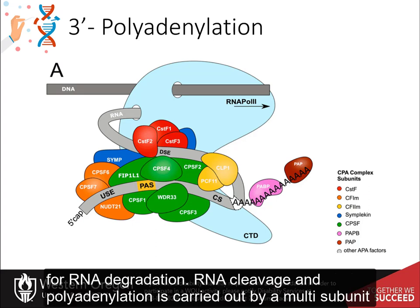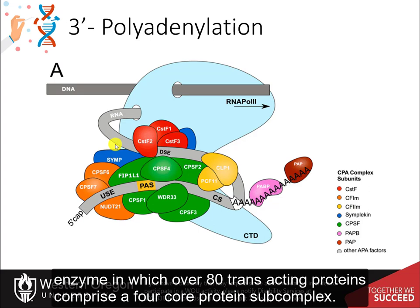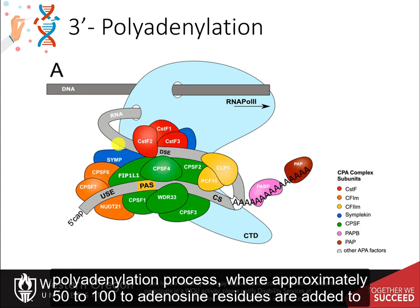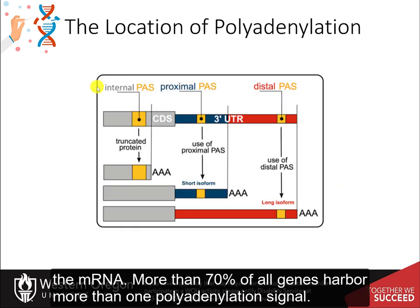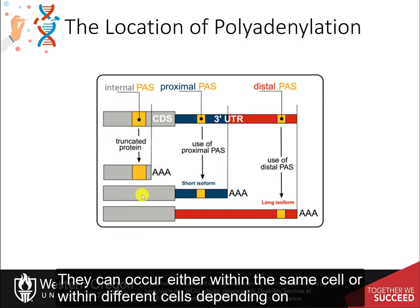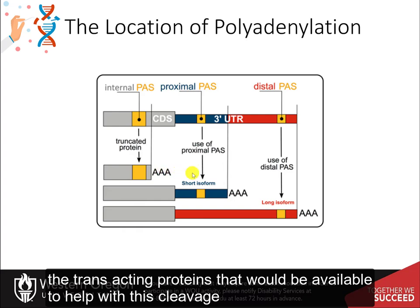RNA cleavage and polyadenylation is carried out by a multi-subunit enzyme in which over 80 trans-acting proteins comprise a four core protein subcomplex. Polyadenylation signal sequences in the nascent messenger RNA initiate the cleavage and polyadenylation process, where approximately 50 to 100 adenosine residues are added to the messenger RNA. More than 70 percent of all genes harbor more than one polyadenylation signal, giving rise to transcript isoforms that can occur either within the same cell or within different cells, depending on the trans-acting proteins available to help with cleavage and polyadenylation.